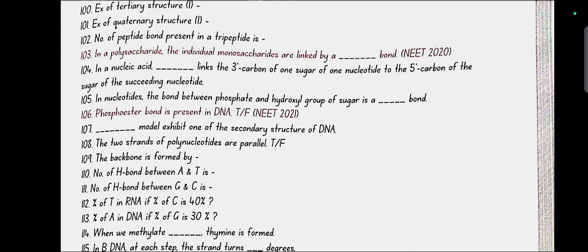In a polysaccharide the individual monosaccharides are linked by glycosidic bond. In a nucleic acid, phosphate links with 3' carbon of 1 sugar of 1 nucleotide to the 5' carbon of the sugar of succeeding nucleotide. In nucleotide, the bond between the phosphate and hydroxyl group of sugar is called the ester bond. Phosphoester bond is present in DNA. No, false because phosphodiester bond is present.